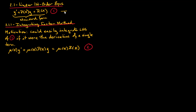Let's suppose that single term looked like this: mu of x multiplied by y. Let's look at its derivative. Applying the product rule, we would have mu of x multiplied by y prime, plus mu prime of x multiplied by y. We'll call this equation 3.